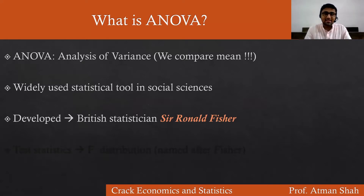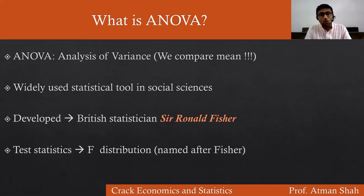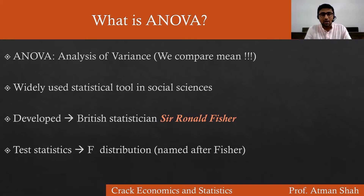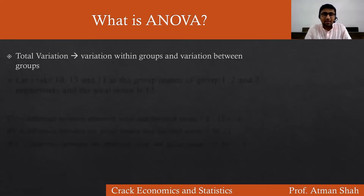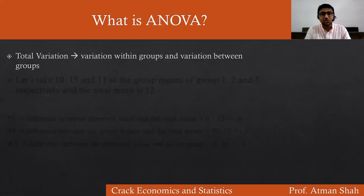The F-ratio or the test statistic that we compute when we use one-way or two-way ANOVA is based on the F distribution, and this distribution is named after Sir Ronald Fisher. In ANOVA, we have total variation and this total variation is bifurcated into two parts: variation within groups and variation between groups.